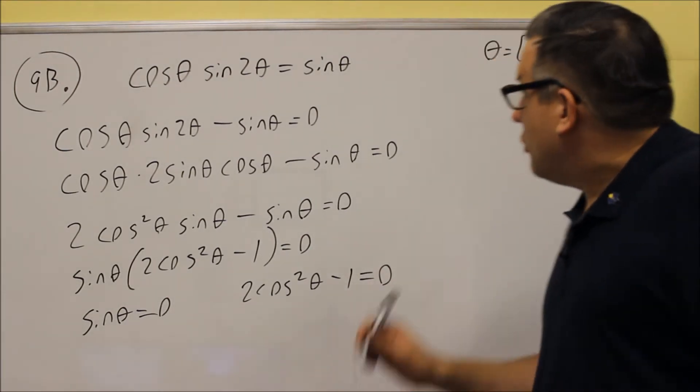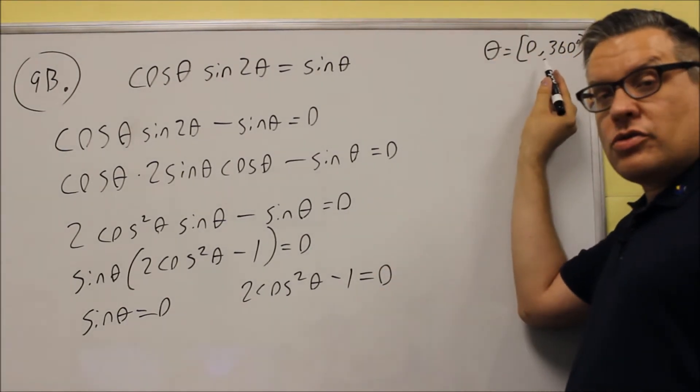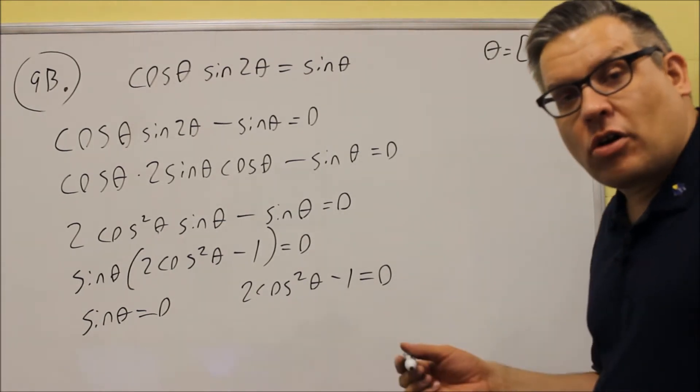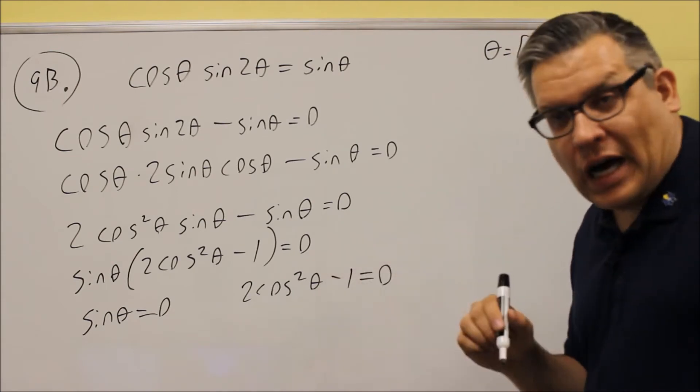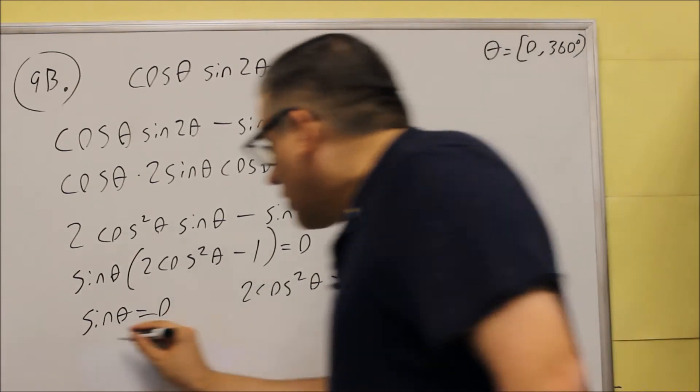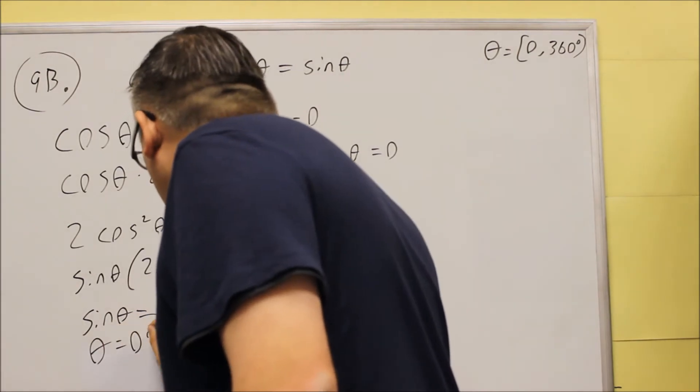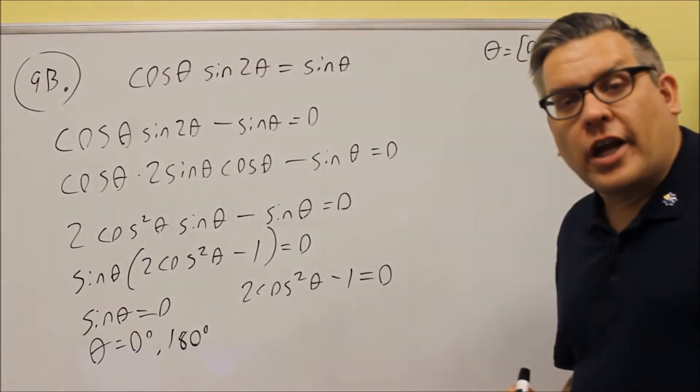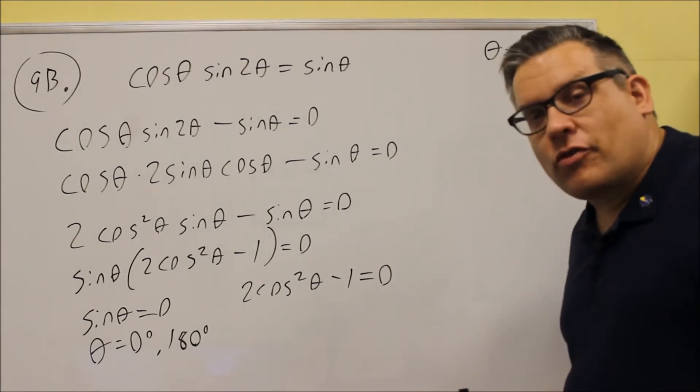The first one, you're looking—this time we want to use degrees. So sine theta equals 0. That's going to occur at 0 degrees and pi. We had those same two angles on a previous problem on this sample test. So we did those already, and we got 0 and 180 degrees. So that takes care of the first one.